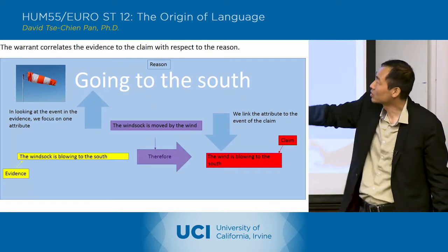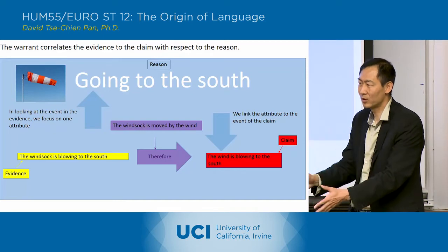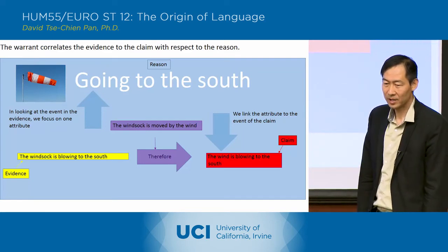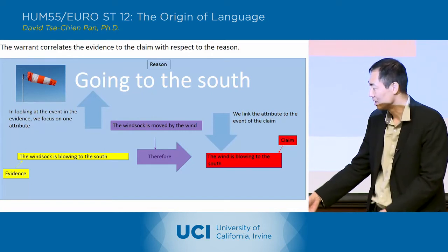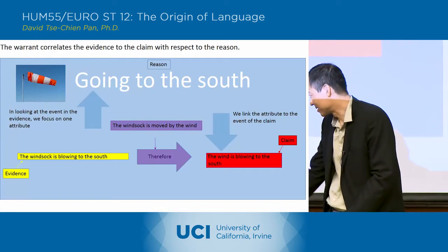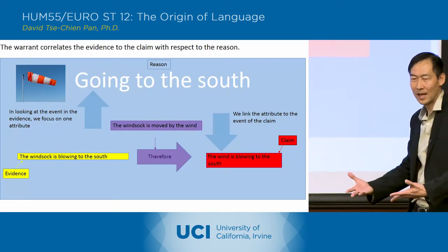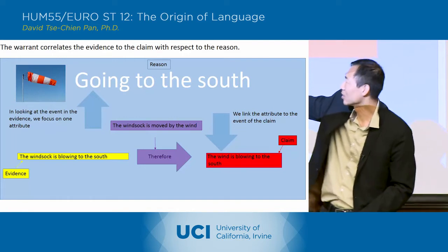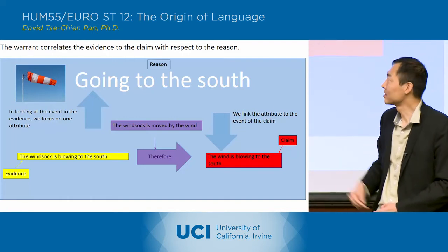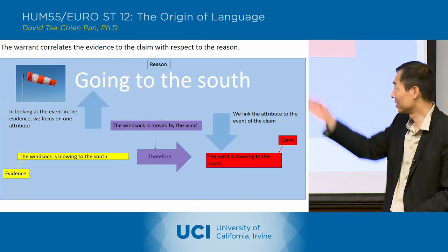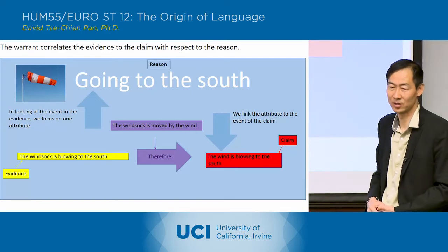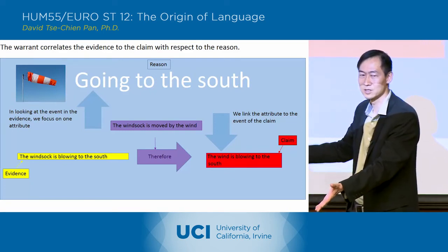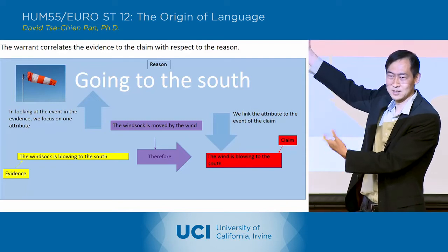The difference between going up and down: going up, you're starting with an event — looking at something, like this table. The table has four legs, or the table's gray. So you're going to focus on one characteristic of the table. Your warrant is going to tell you which characteristic to focus on. What's important to you about the table? That's the first thing. For the windsock, the color's not important to us here — but the direction in which it's blowing, that's important to us. The warrant is telling us which characteristic to focus on. We start with all sorts of different characteristics and pick out one as important. That's the arrow going up.